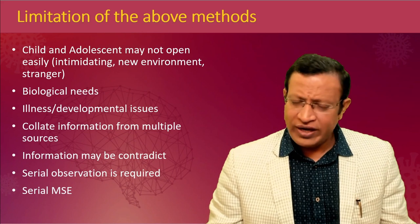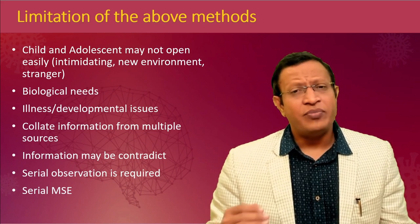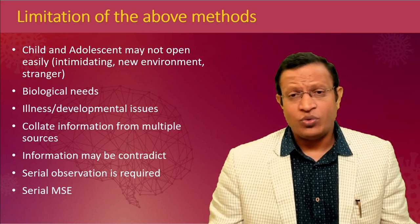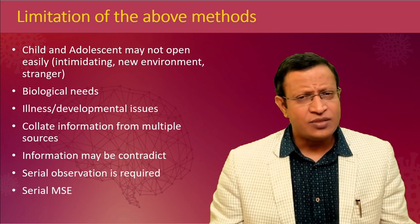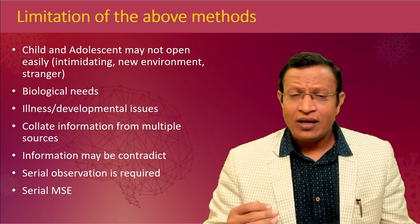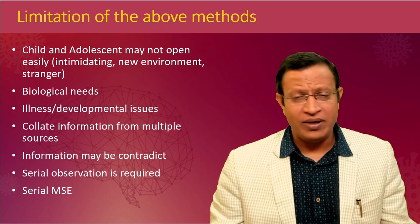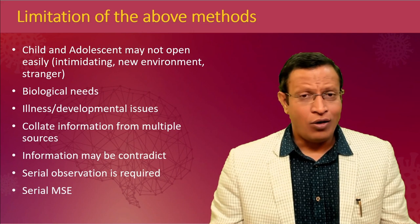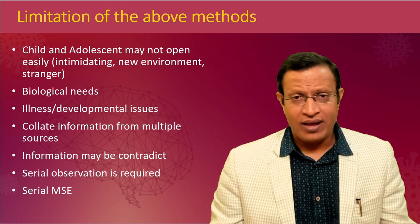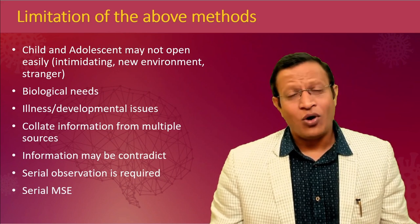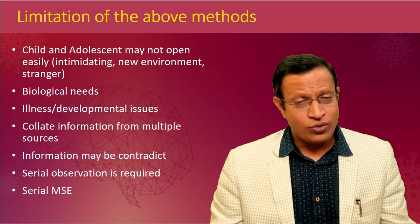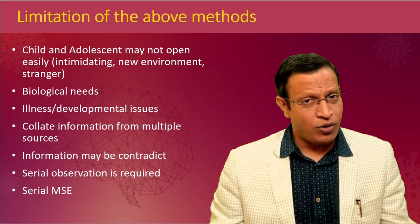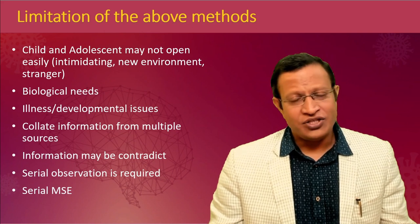Collecting information from multiple sources is very important, and often the information from various sources may be contradictory. The father may give history that is completely contradictory to the mother's, because the child behaves differently in different settings with different people. For example, the child may be very talkative and active at home but very shy in school. Serial observation and serial mental status examination will be very helpful in reaching the correct diagnosis. The evaluation should be done by trained professionals including undergraduates, postgraduates, psychiatrists, primary care doctors, nurses, psychologists, and social workers. Family members should also know about detailed evaluation so they can help the doctor reach a diagnosis.